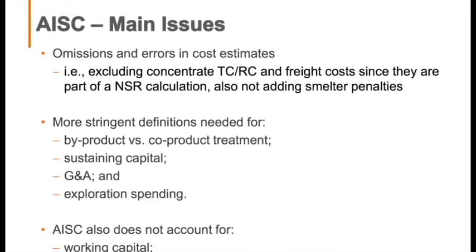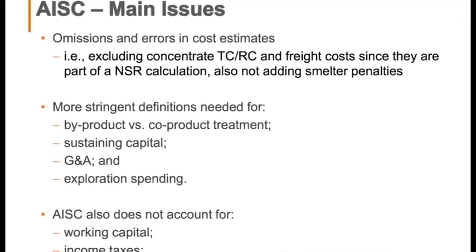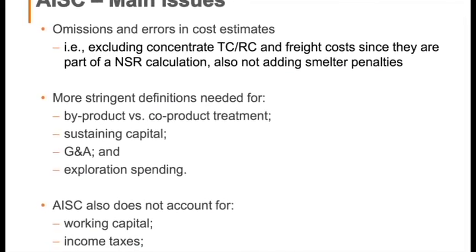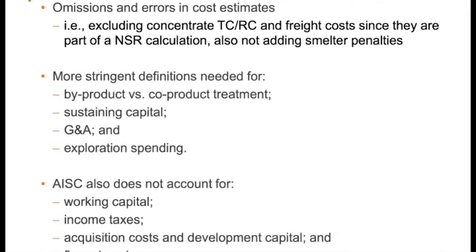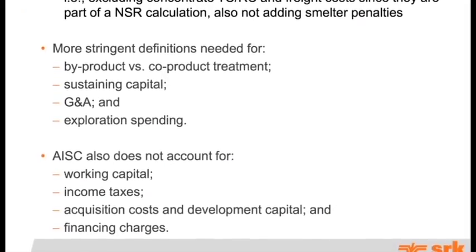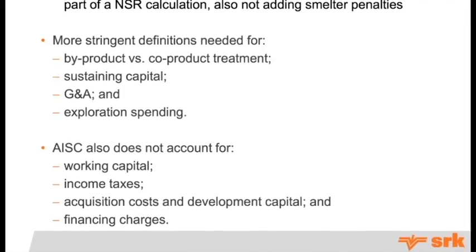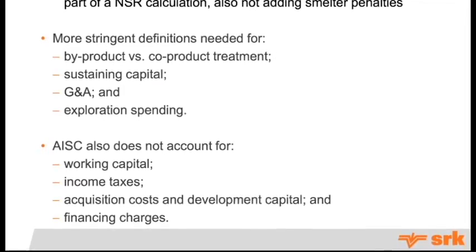More stringent definitions are definitely needed for by-product versus co-product — and I'll give you an example of how we approach it. Sustaining capital, G&A, and exploration also need more definition. And as Mark said, the current framework ignores some pretty important items, and we have some suggestions near the end of this talk about that.